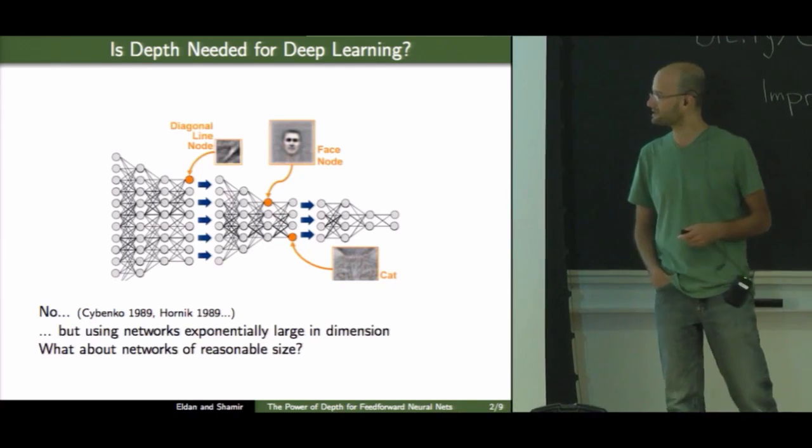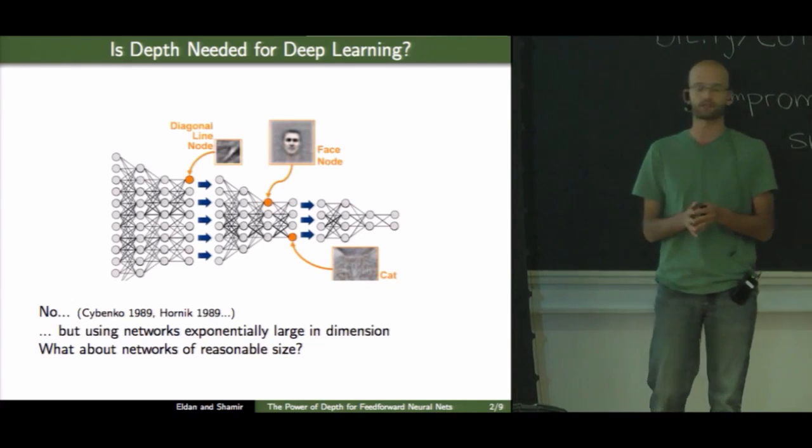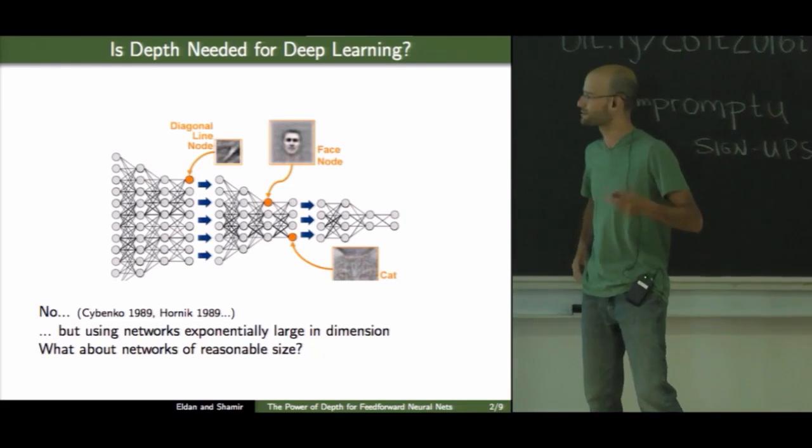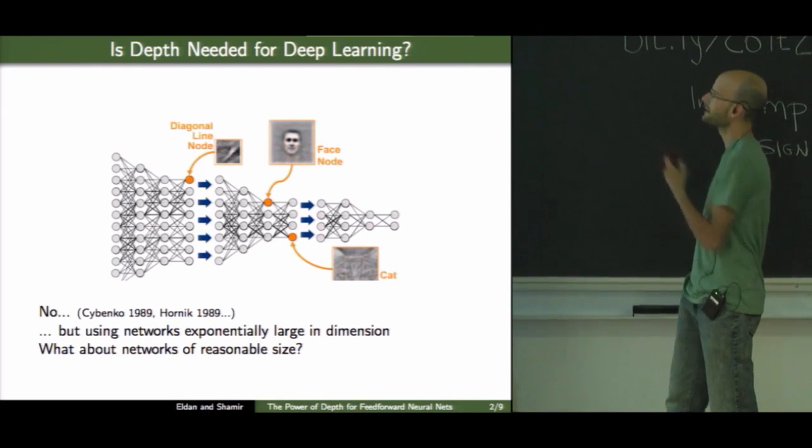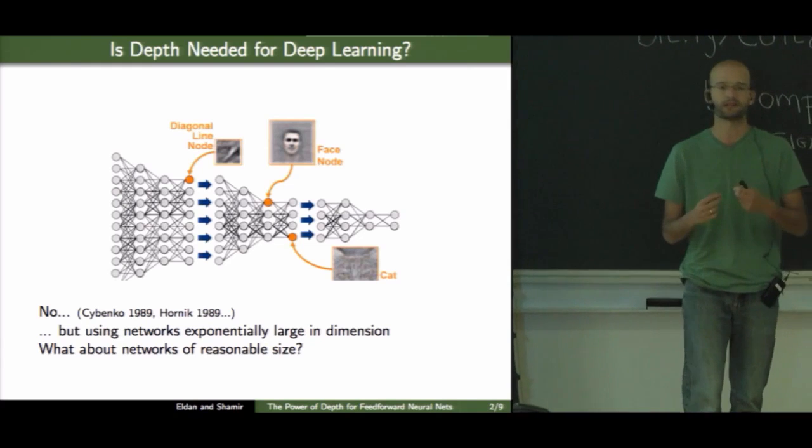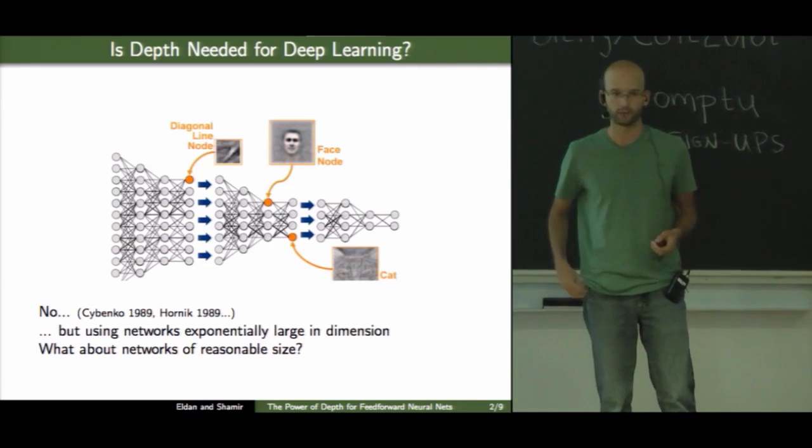The catch, of course, is that to get this, we need to use networks which are exponentially large in the dimension, so not something of a size which would be reasonable in practice. And one can ask, what happens if we want to look more specifically at networks or functions which can be expressible by networks whose size is reasonably bounded?